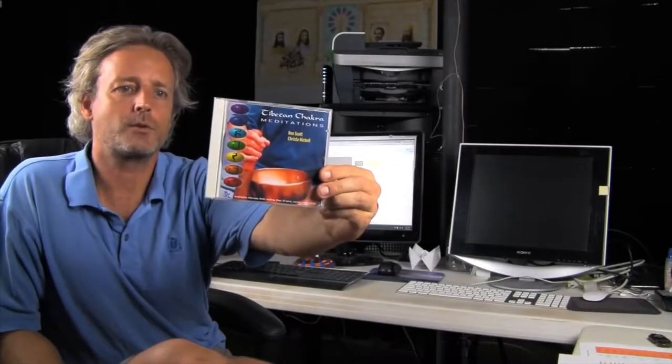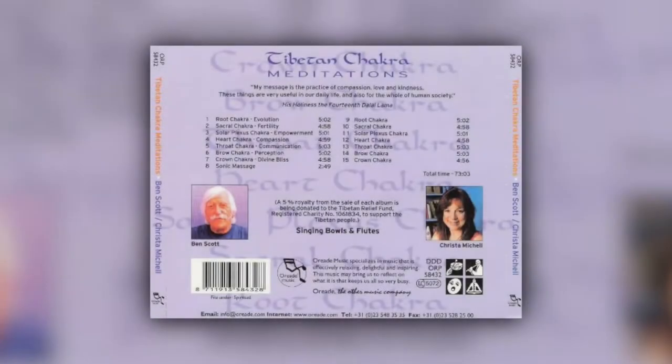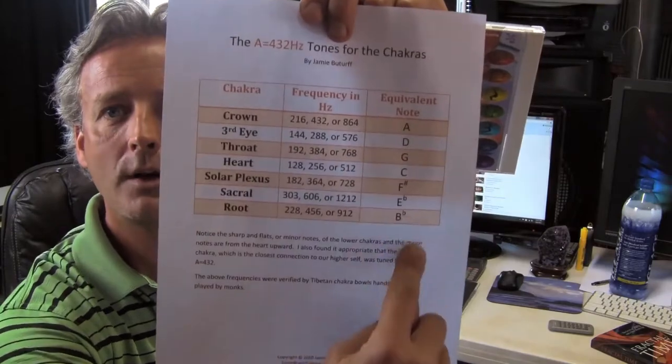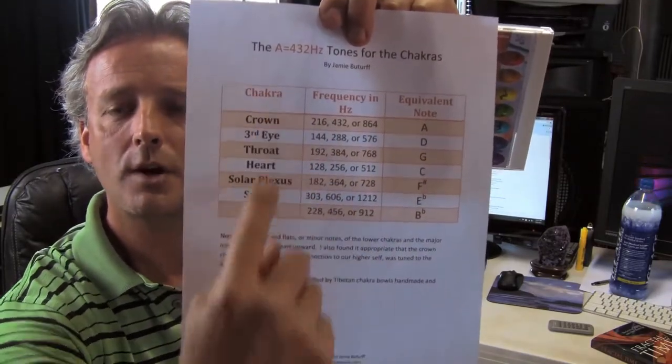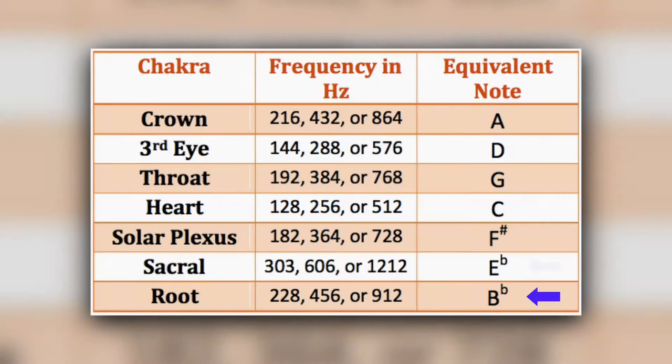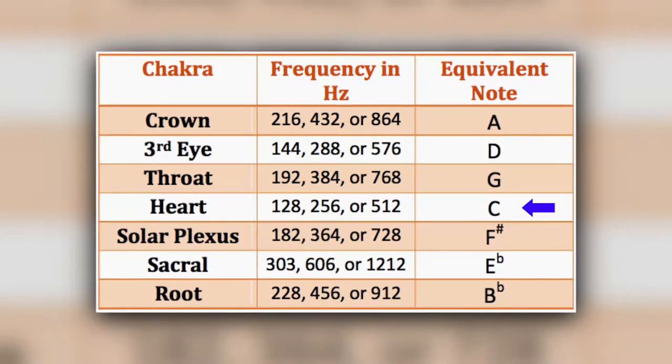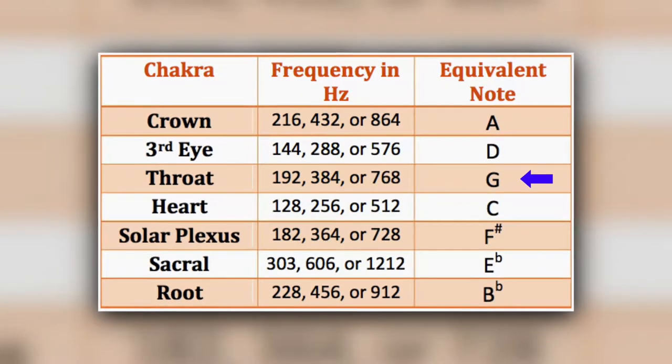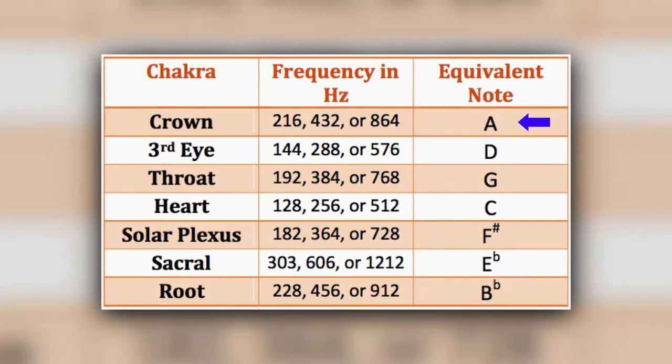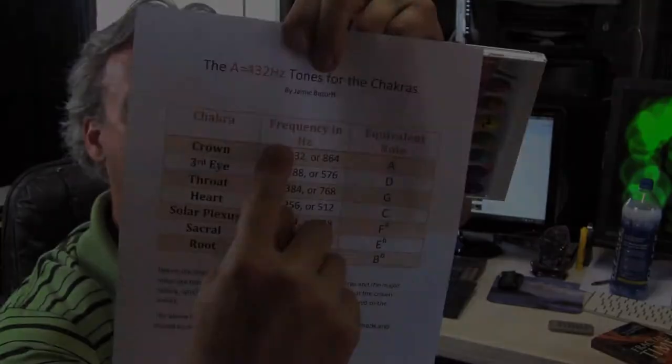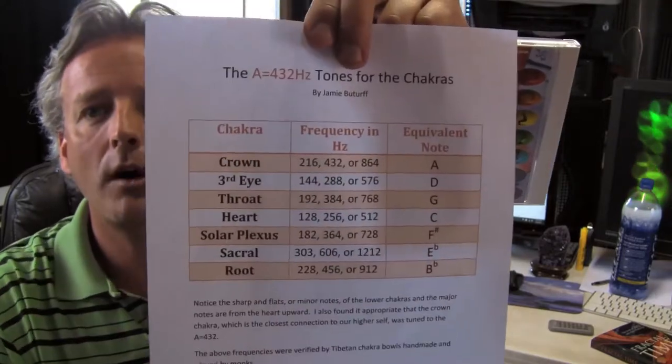From this CD here by Ben Scott and Krista Mitchell, here's the tones in the back—all the tracks. These chakra bowls are handmade by Tibetan monks, and they only use their hearing and their feeling. But these are the notes, these are the frequencies, and these are the chakras. You've got the 216, 432, or 864—those are all octaves of one another. They're all the note of A, so you can use whichever one you want.